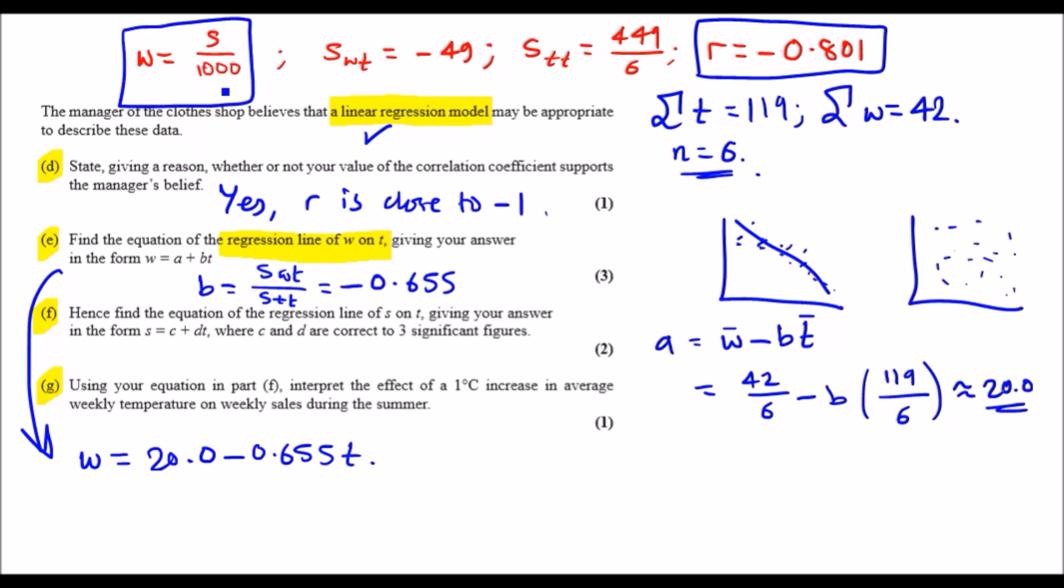Technically, all you can really do is just make S the subject here. If you do that, you get S equals 1000W. And well, if you just replace W with your equation, you just multiply the whole equation by 1000. So it'll just literally be 20,000 minus 655T. And that's it.